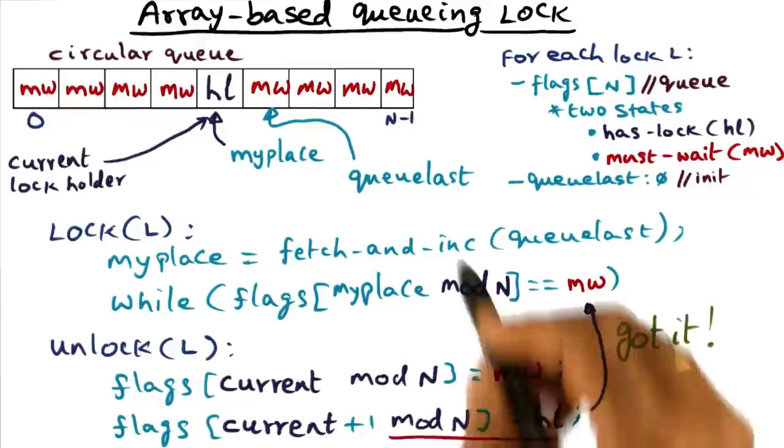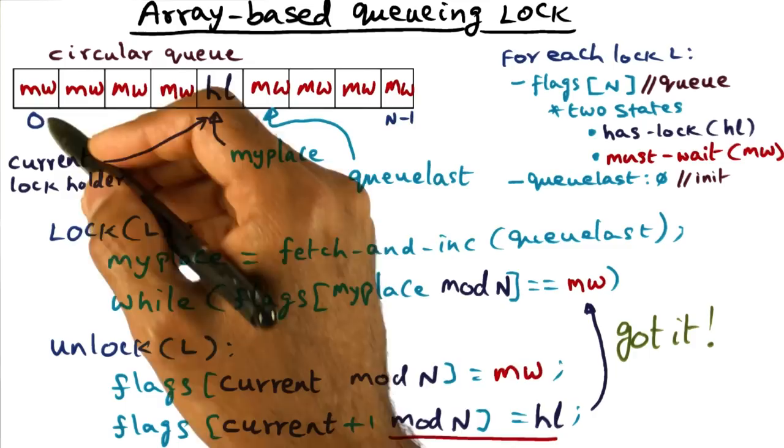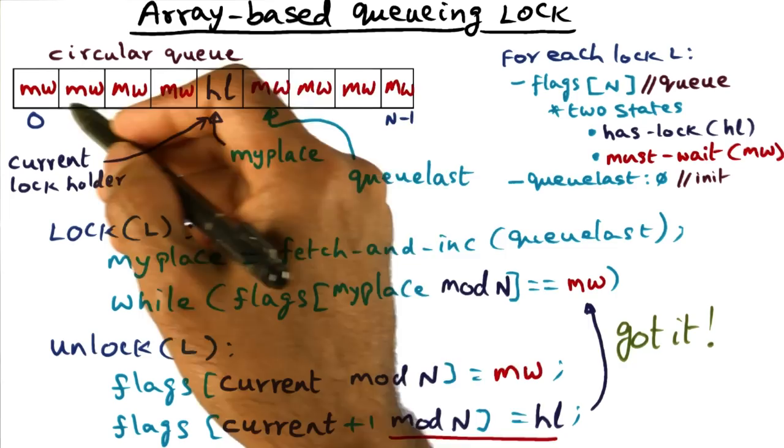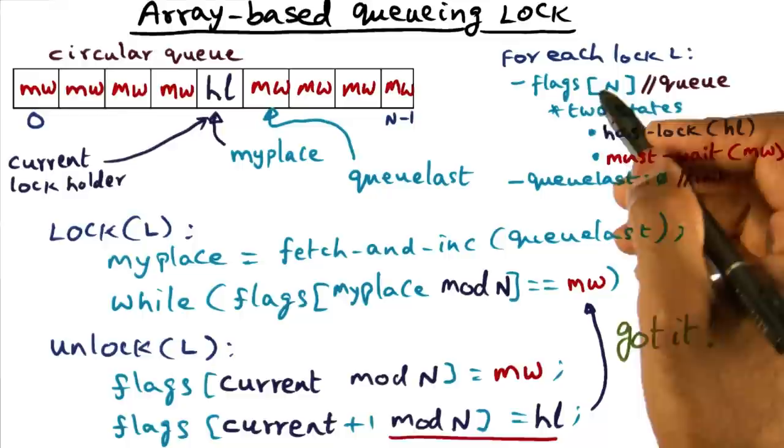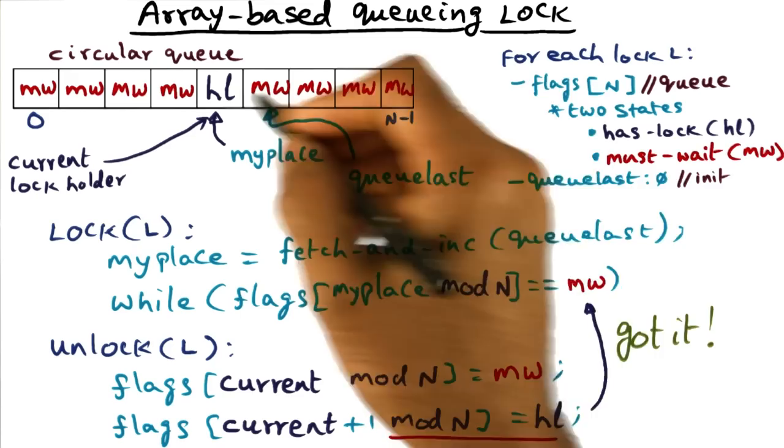Now you might be wondering, are there any downside to this array based queuing lock? I'm sure there is. The first thing I'm sure that you've noticed already is the size of this data structure is as big as the number of processors in the multiprocessor. So the space complexity for this algorithm is order of N for every lock that you have in the multiprogram.